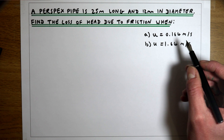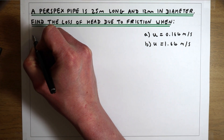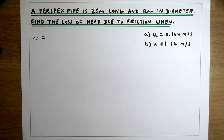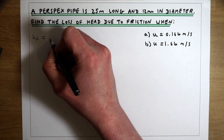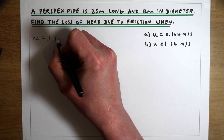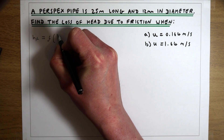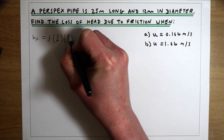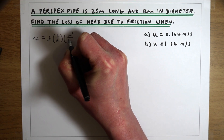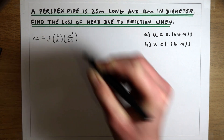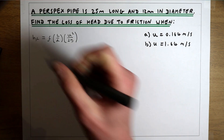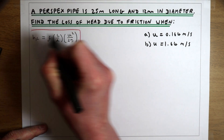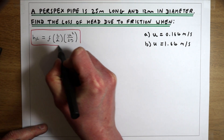The way we're going to do that is with the Darcy-Weisbach equation, which tells us that the total loss of head due to friction is the friction factor times the length of the pipe over the diameter of the pipe, times by the velocity squared over 2g. This is the main equation we're going to use.